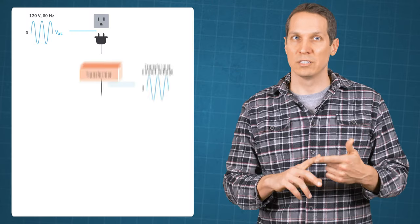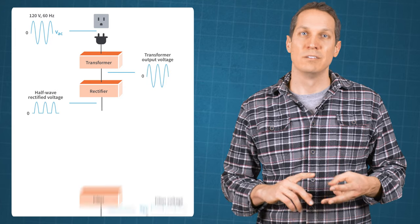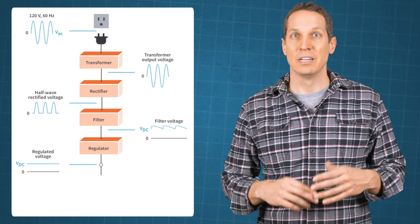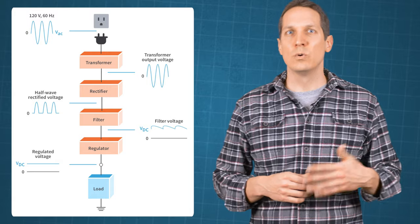From a higher level, the components of a DC power supply are the transformer, the rectifier, filter, regulator, and finally, the load. We'll go over those briefly and then dive deeper into the rectifier portion.